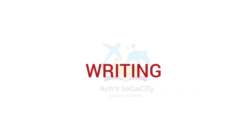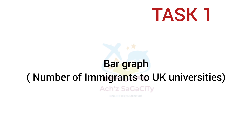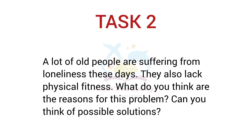Now related to the writing module of academic: Task 1 was a bar graph about the number of immigrants to UK universities for several reasons. Task 2 was about how a lot of old people are suffering from loneliness these days and also lack physical fitness — what do you think are the reasons for the problem and can you think of possible solutions? This comes under the problem-solution type, so you need to write the reasons and also the solutions.